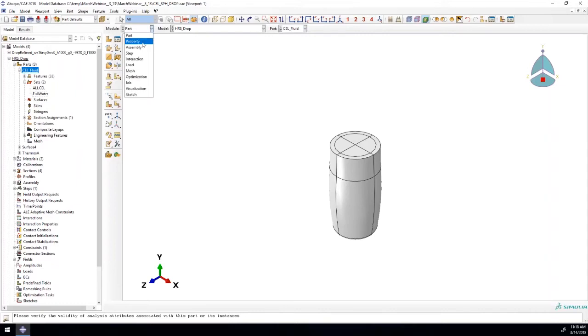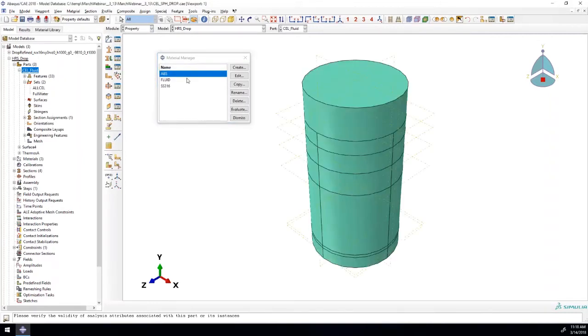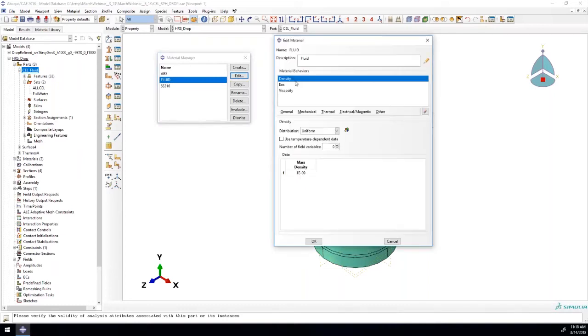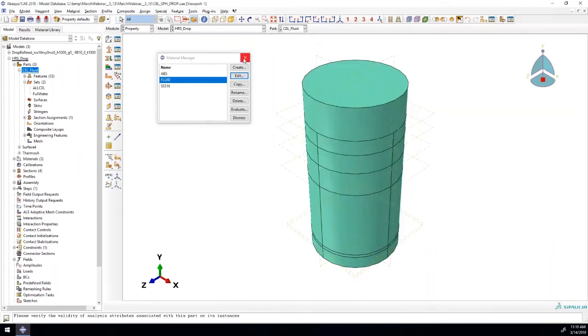Next up, we can work our way down the module tree to the property module where we've got some properties defined for the bottle, for the cap, and for that fluid. For the cap, we're just using an ABS. For the bottle, we have a stainless steel. And then for the fluid, we just have some properties defined here to capture a simple water property. For that, we'll need the dynamic viscosity, the density, and then an equation of state. That's all we'll need with the additional definition of the Eulerian part instance to capture that behavior.